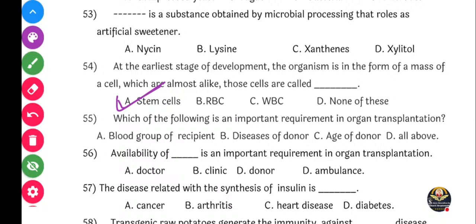Next question: Which of the following is an important requirement in organ transplantation? Options: Blood group of recipient, disease of donor, age of donor, or all of the above. Correct answer: all of the above. Karan zekoni organ transplant karanaar ahe tensa blood group match zaala pahe. All of the above is the right answer.